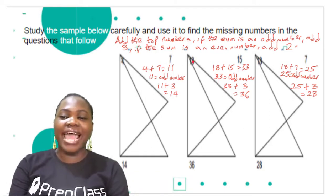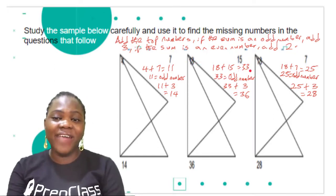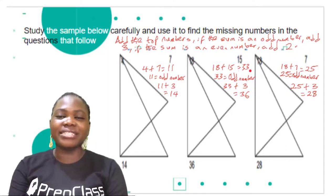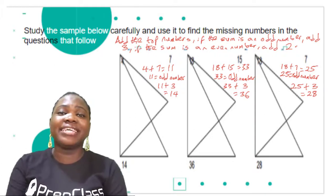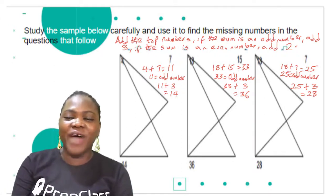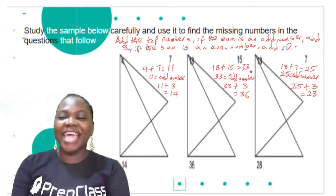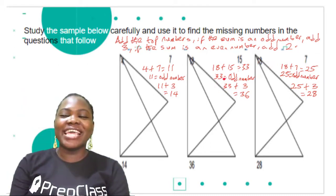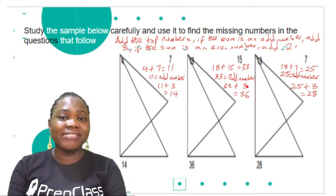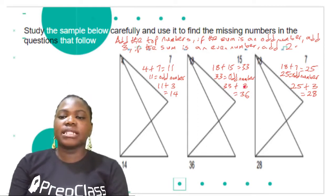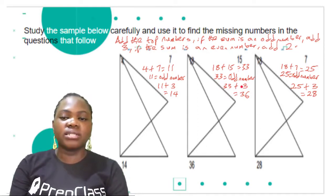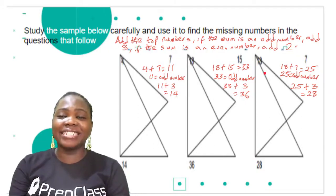The top numbers are 18 and 15. 18 plus 15 is 33. Is 33 an odd number or an even number? It ends in 3, so it's an odd number — clap for yourself! So 33 is an odd number. 33 plus 3 — we're adding three because 33 is odd — equals 36.